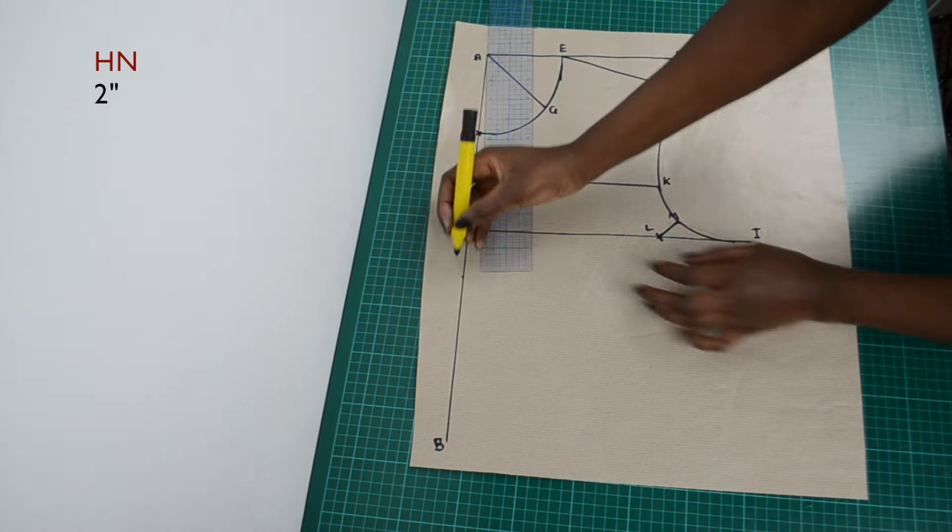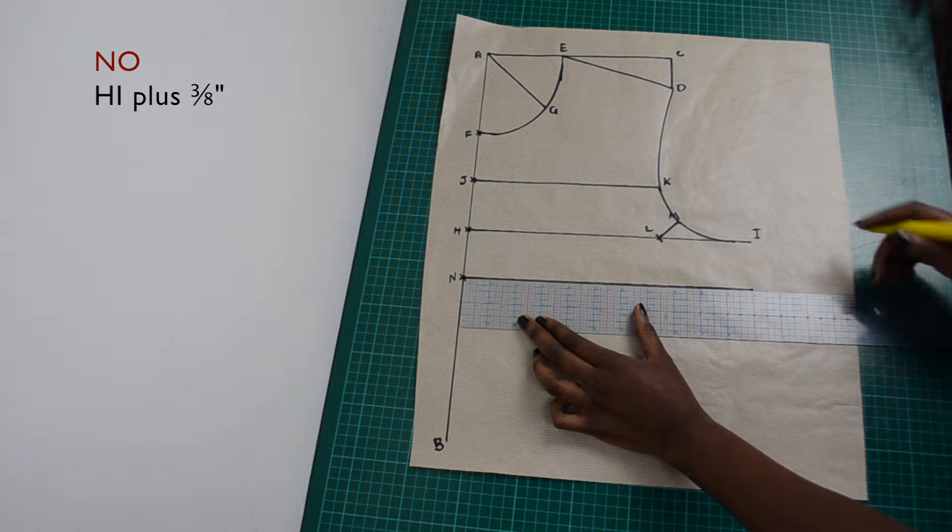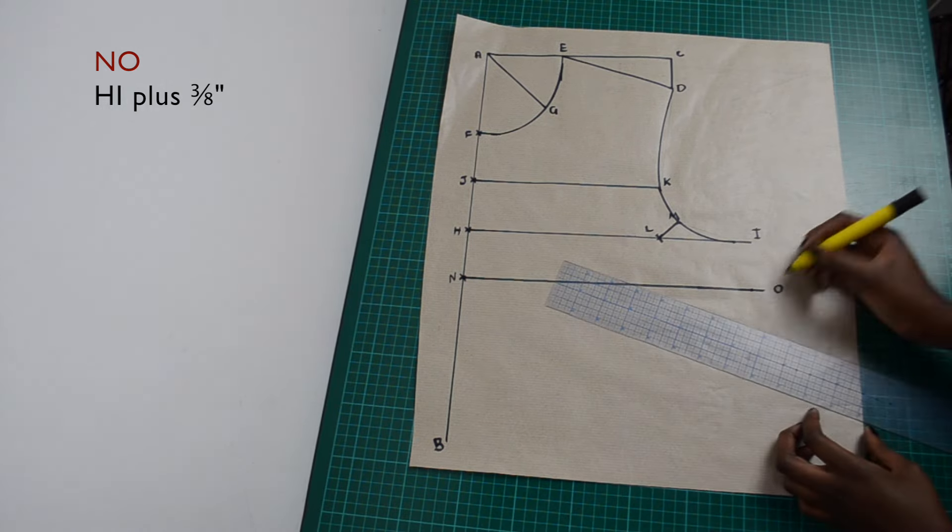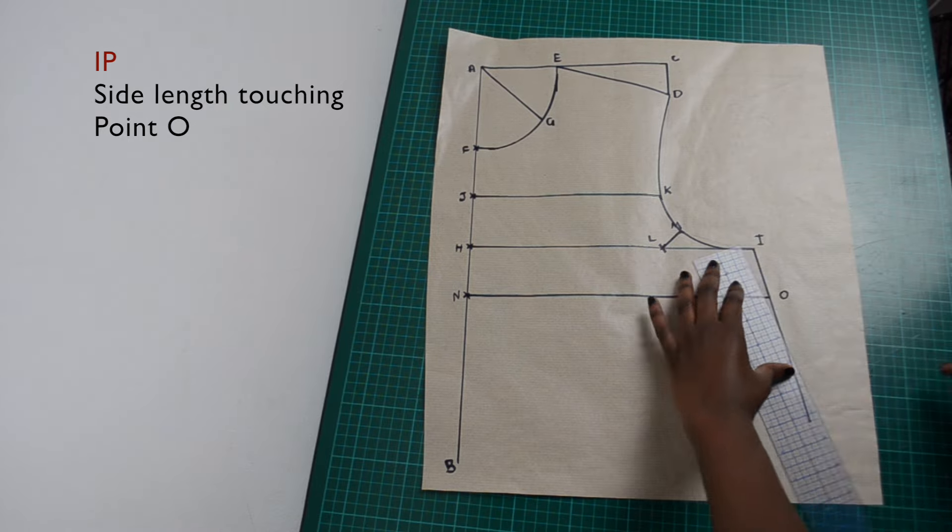Measure down 2 inches from H. From point I, draw your side length towards point O.